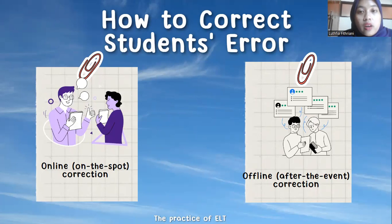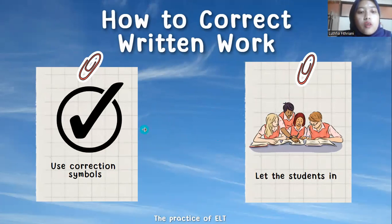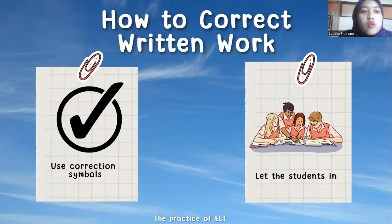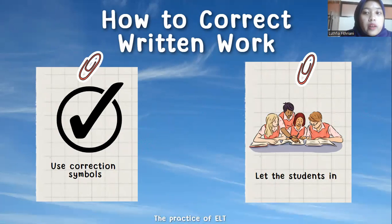That's how to correct student errors in speaking. For correcting student mistakes in writing work, there are two techniques: use correction symbols or let the student in. Using correction symbols is the simplest way to correct a student's writing work. The important thing the teacher should consider is that while giving a correction symbol to the student's written work, it must be followed by an explanation, so the student will learn from their mistakes. The 'let the student in' technique can be done by applying clear feedback in the classroom.